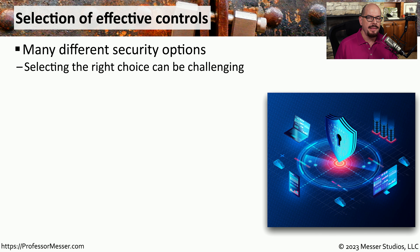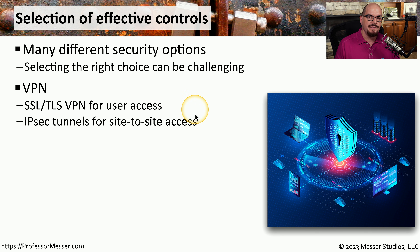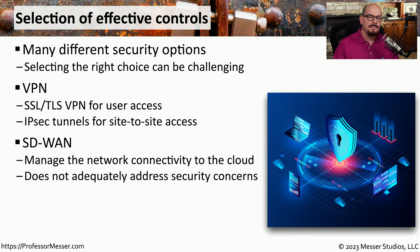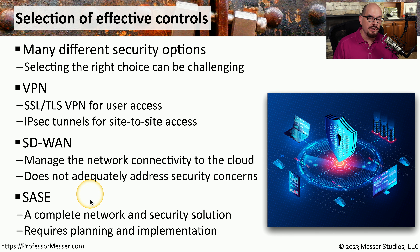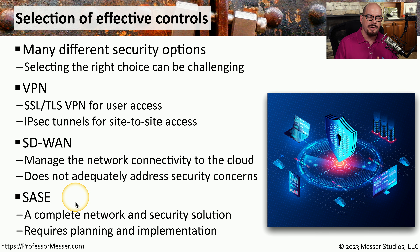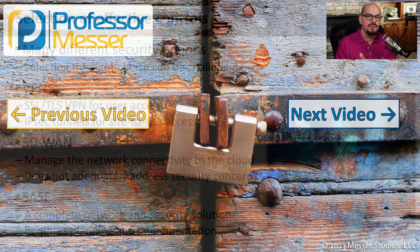Deciding on a secure communication method and its implementation can be challenging, and some organizations will use one or more of these together. They might use remote access VPNs or SSL VPNs for end user communication, and continue to use IPsec site-to-site VPNs for remote locations. To provide seamless connection for cloud-based applications, an organization might implement SD-WAN, and to secure all communication over that SD-WAN, they can implement SASE. There are advantages and disadvantages to all of these technologies, and a security administrator might choose one or more depending on the application and connectivity requirements.